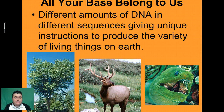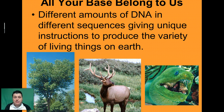An elm, an elk, and an eel all have DNA as the basis for their genetic code. But they're going to have different amounts of DNA and the order of the DNA bases is going to be different. So trees have traits that are different from an elk, and elks have traits that are different from an eel.